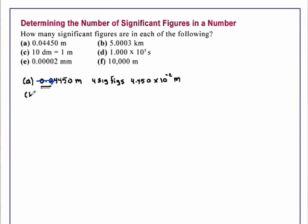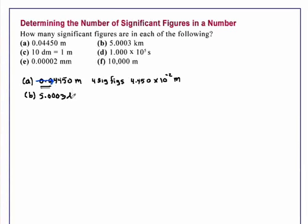In part B, we have 5.0003 kilometers. The 5 is significant as is each of the digits after the decimal point, including the 3 interior zeros. This gives us 5 significant figures.